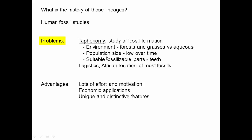Our ancestors lived in environments not particularly good for making fossils. Population size was also fairly small — humans lived in small, disparate groups, not huge herds — meaning fewer individuals died and left fossils. Additionally, human skeletons are somewhat fragile compared to many other organisms, which is why some of our best data actually comes from fossilized teeth.